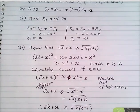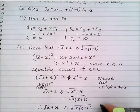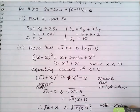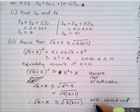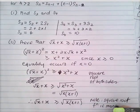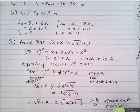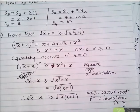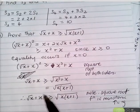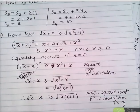Note that equality only occurs when x = 0, and we note that the square root function is monotonically increasing, so taking positive square roots preserves the inequality.